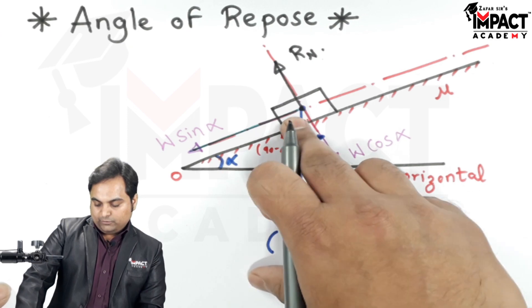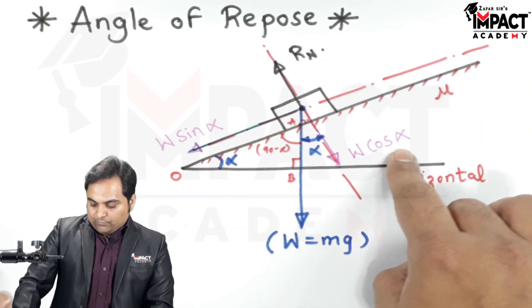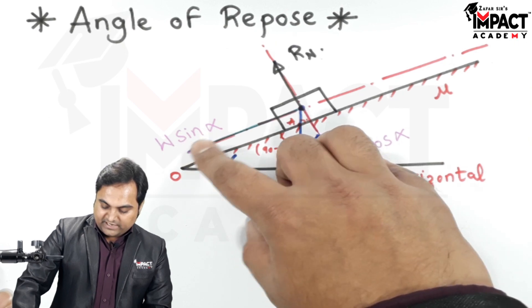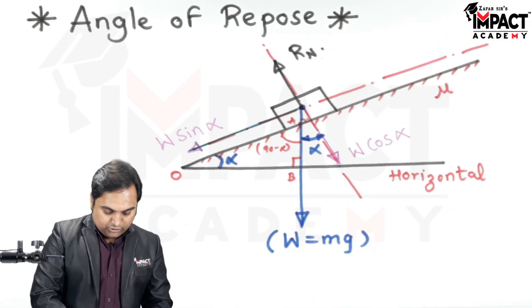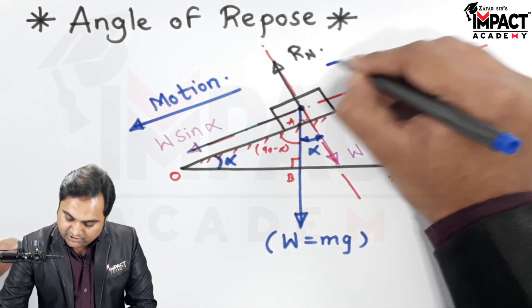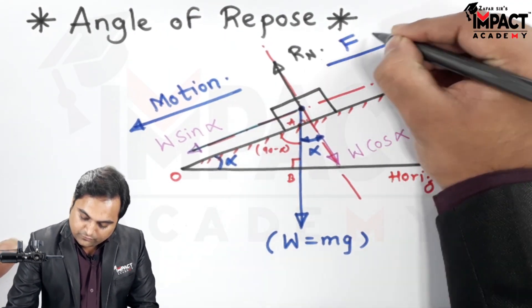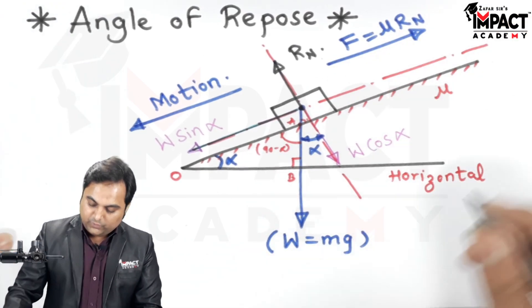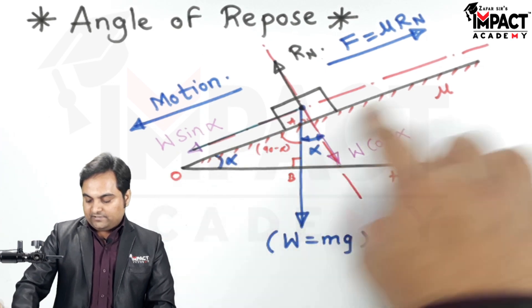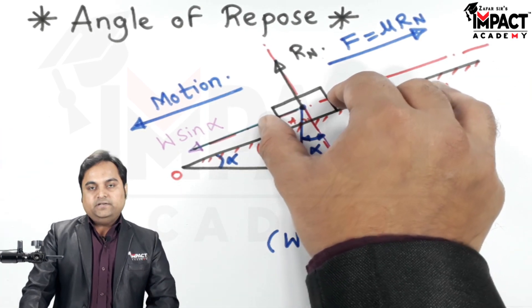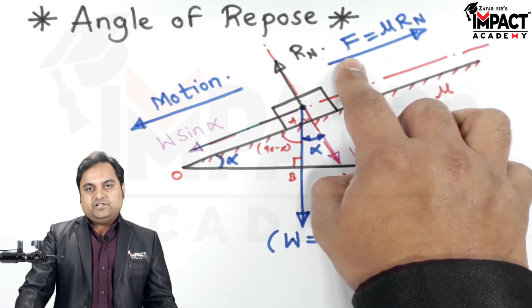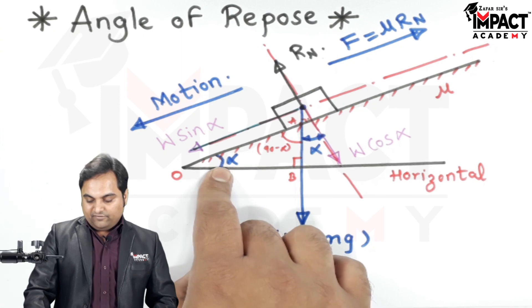Since the block would be sliding down, as we can clearly see from this diagram, the component w cos alpha will keep the block in contact with this surface, whereas due to the w sine alpha component it would try to slide down. The motion of the object is in the downward direction, whereas friction is opposite to motion, so friction force denoted by f equals mu R_n, acting in the upward direction. In short, the angle of repose is the angle made by an inclined plane with the horizontal wherein if we keep an object it is just on the point of sliding down, and when it is on the point of sliding down the value of force of friction is maximum — that is called the limiting force of friction. So alpha is nothing but the angle of repose.